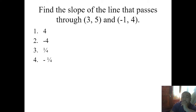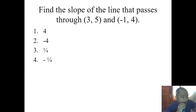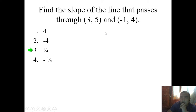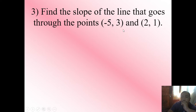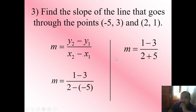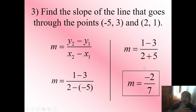Find the slope of the line that passes through (3, 5) and (-1, 4). The choices are: 4, -4, 1/4, -1/4. The answer is one fourth: (4 - 5) / (-1 - 3) = -1 / -4 = positive one fourth. Next, find the slope of the line that passes through (-5, 3) and (2, 1). Using the formula: (1 - 3) / (2 - (-5)) = -2 / 7. When the slope is negative, the line goes in the downward left-to-right direction.